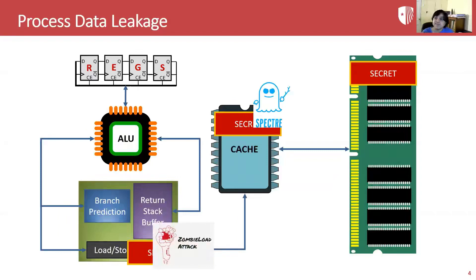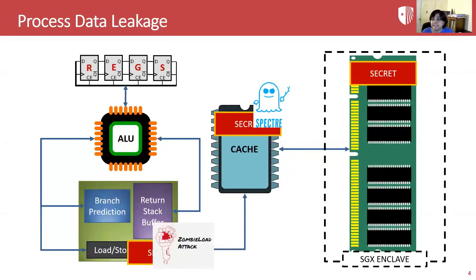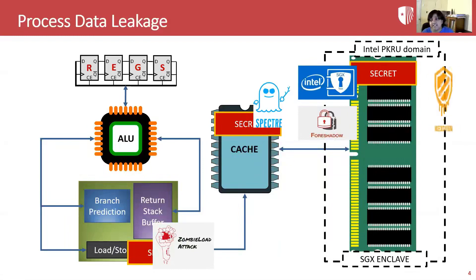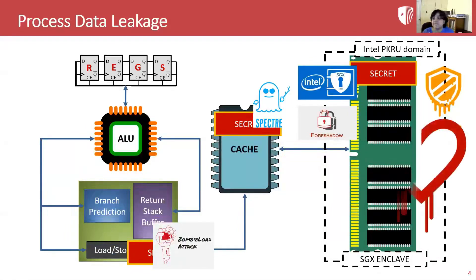One might think that storing sensitive data in a trusted execution environment, such as the Intel SGX enclave, would prevent it from being leaked. Unfortunately, attacks such as Foreshadow and SGX Spectre have shown this not to be the case. Similarly, user space memory isolation techniques such as Intel PKRU are also vulnerable to Meltdown-style transient execution attacks. And of course, data in DRAM can be leaked by data leakage attacks such as the Heartbleed vulnerability that affected the OpenSSL libraries.